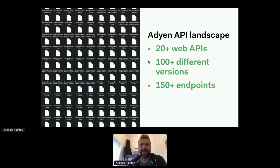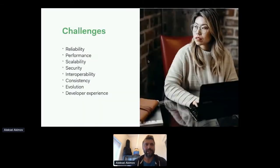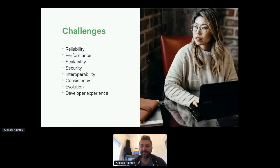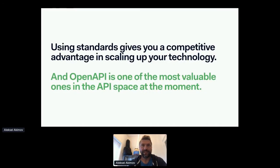In total, these APIs provide about 150 endpoints, each solving a single user task or covering a wide range of business cases. This all comes with great responsibility and brings a lot of challenges — reliability, performance, scalability, security, and everything else similar to any other company operating in the API space. You can imagine how difficult it is to deal with all these challenges at this scale, so we've learned a lot of things, many of which are based on different technologies and processes.